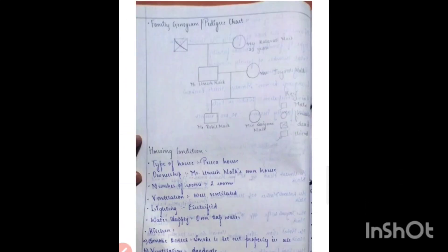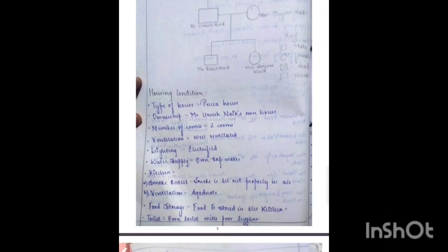Next comes the family genogram, where you'll have to draw three generations. Then comes the housing condition — you all have to mention the type of house, whether it is a pakka house or kacha house, whether it is well ventilated or not, whether there is proper lighting, proper water supply, and how the kitchen is.